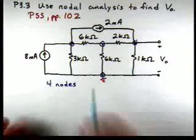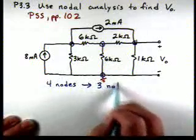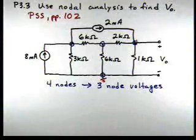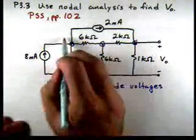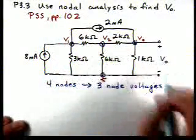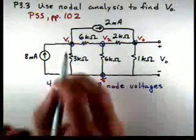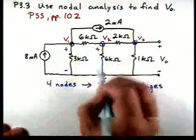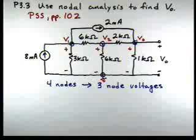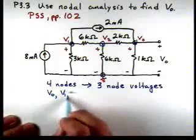So now we have the reference node. We know that we're going to have three node voltages to solve for. And let's label this one V1, this one V2, and we'll go ahead and label this one V0. It's the same as that voltage. And if you'll recall, these voltages are referenced as shown on our diagram. So now our three node voltages are V0, V1, V2.